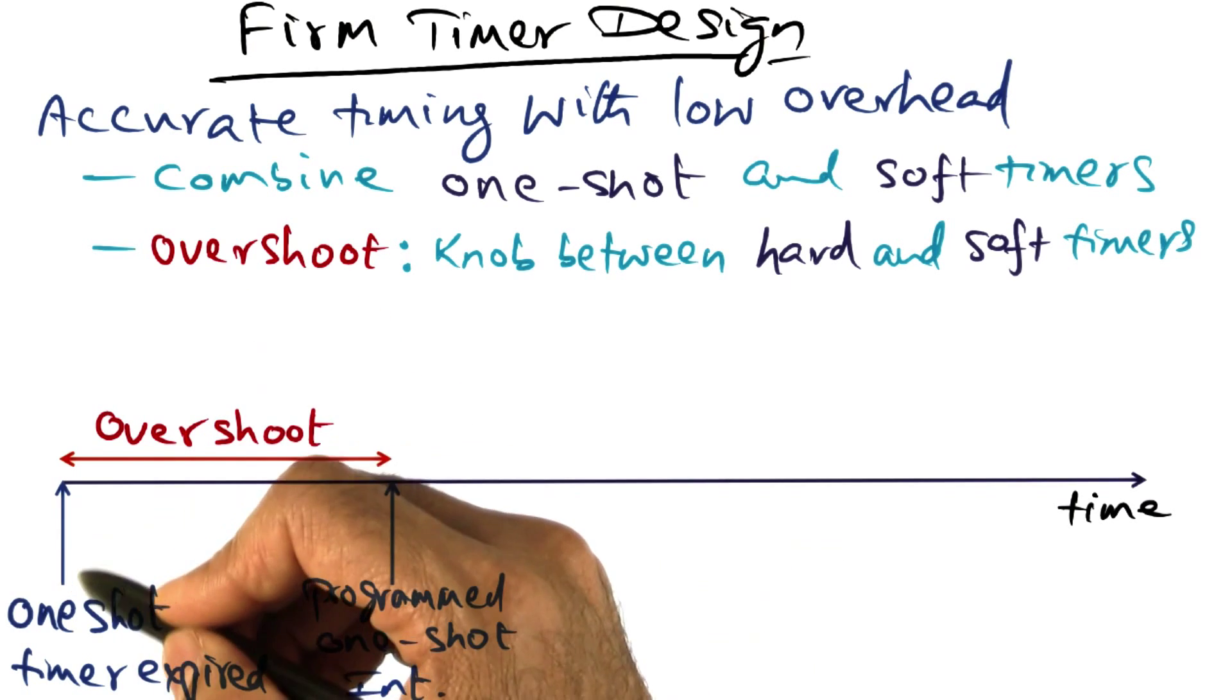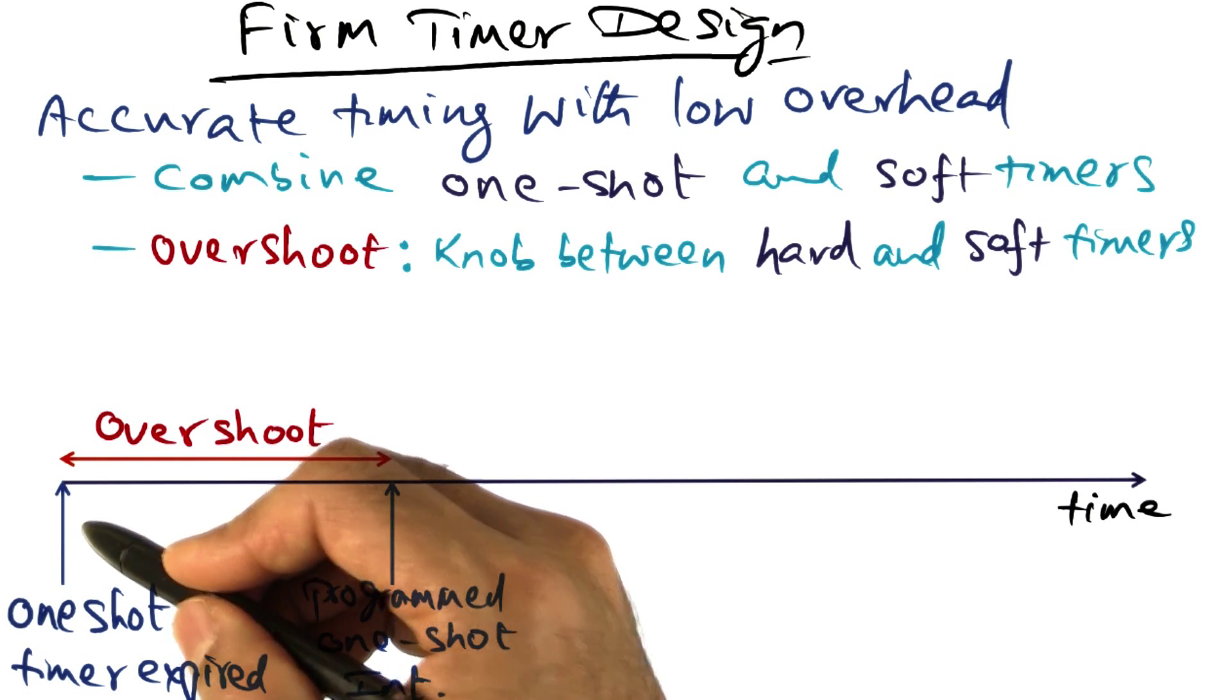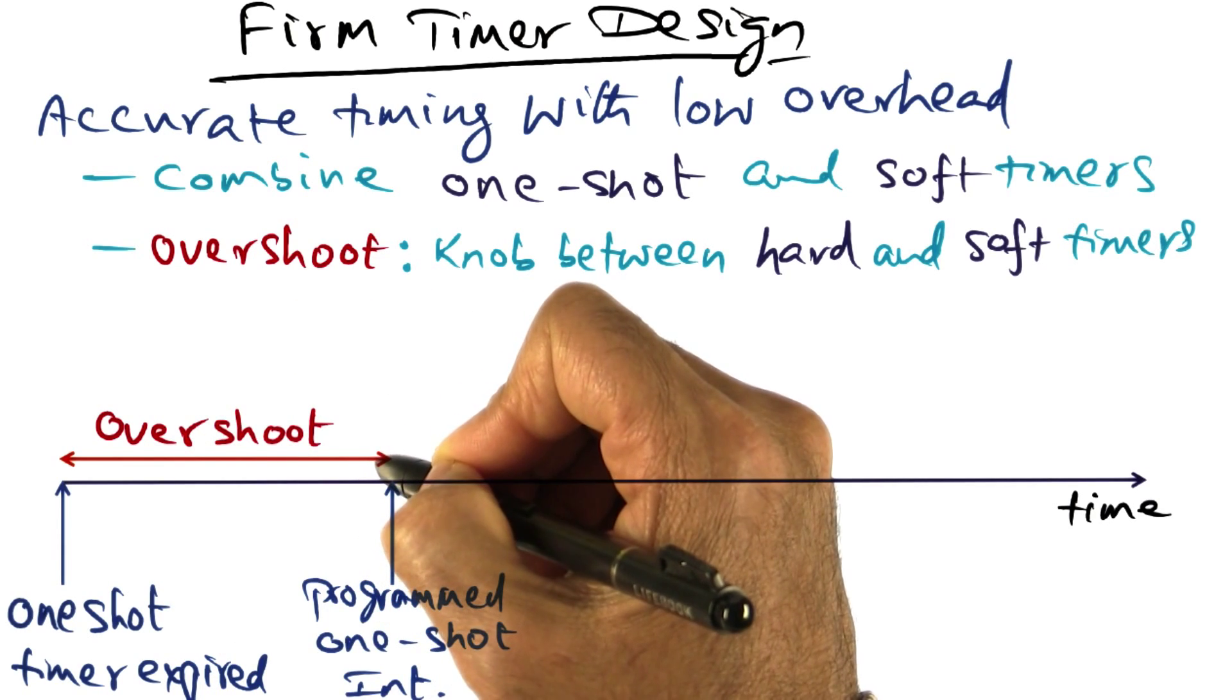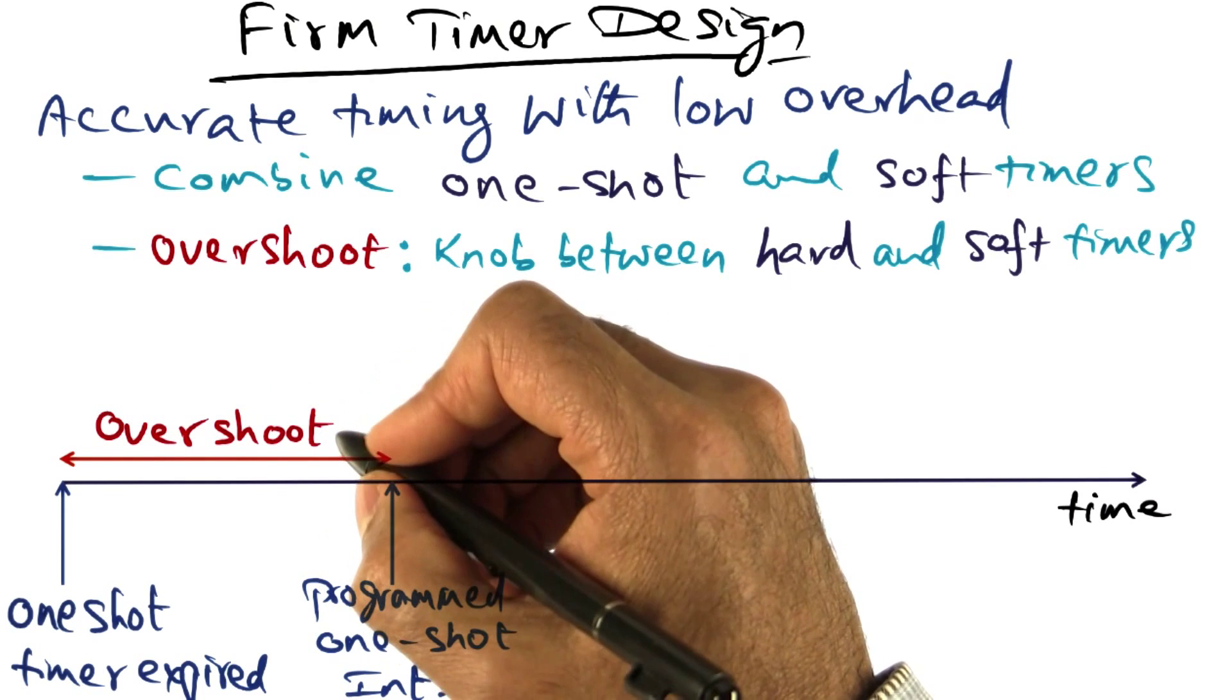The idea is the one shot timer expired here. This is the point at which the event happened. But what we're going to do is have a parameter associated with the one shot timer called the overshoot parameter.